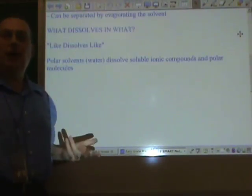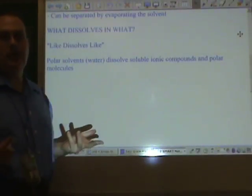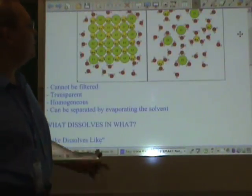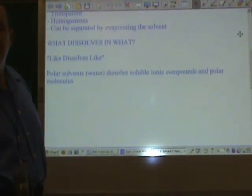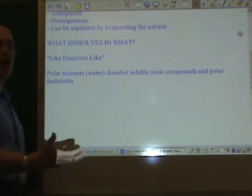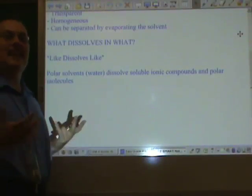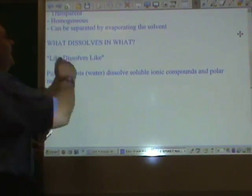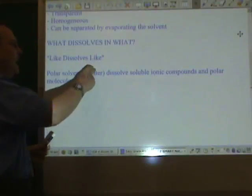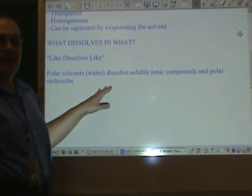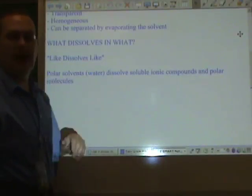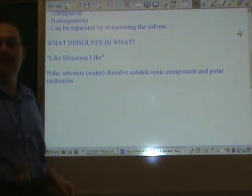Now, if water didn't have partially positive and partially negative charged ends, there would be nothing to attract these positive and negative ions. In order to dissolve things that have charge, your solvent needs to have charge. In other words, like dissolves like. Polar solvents, like water, are capable of dissolving things that are charged, like ionic compounds and other polar molecules.